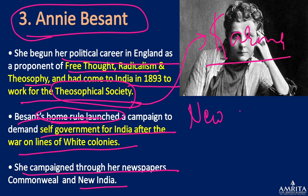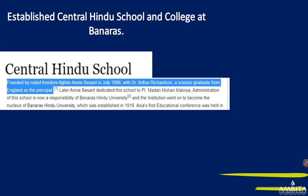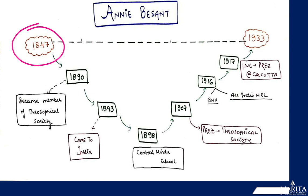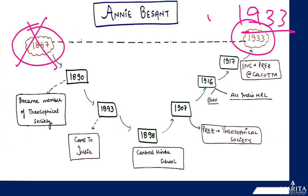Annie Besant was also involved in the Home Rule League movement — a very important portion. She campaigned for self-government after the war, on the lines of the white colonies, through her newspapers 'Commonweal' and 'New India.' Note: 'Young India' was Mahatma Gandhi's journal, while 'New India' was Annie Besant's — a common confusion. Regarding her timeline, her death in 1933 is more relevant than her birth; however, after 1920 she became sidelined from mainstream politics.